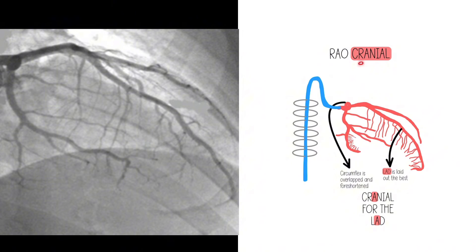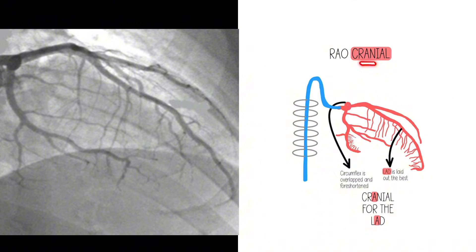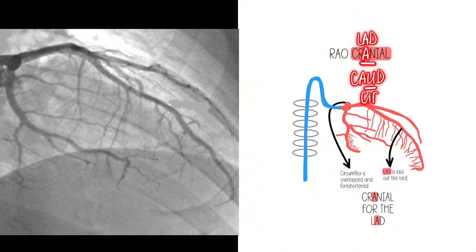Now how do we know it is cranial? Although this is really for the mid to distal LAD, we do see the LAD best in this view — it is the least overlapped. Cranial views are for the LAD, and caudal views are for the circumflex, because the circumflex has a 'U' in it — just to help you remember.